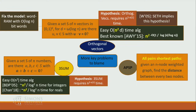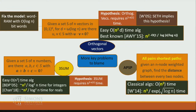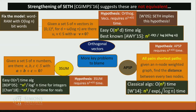For the APSP problem, we are given an n-node weighted graph and need to find pairwise distances. There are several classical algorithms that run in O(n³) time, and the current best running time is n³/exp(√log n). The APSP hypothesis states that this problem requires essentially n³ time. If you assume the non-deterministic strong exponential time hypothesis, the 3SUM, OV, and APSP hypotheses are not all equivalent, so we really need to work with different hypotheses.